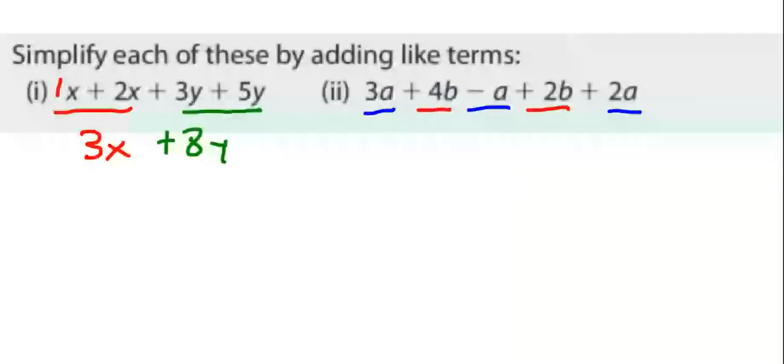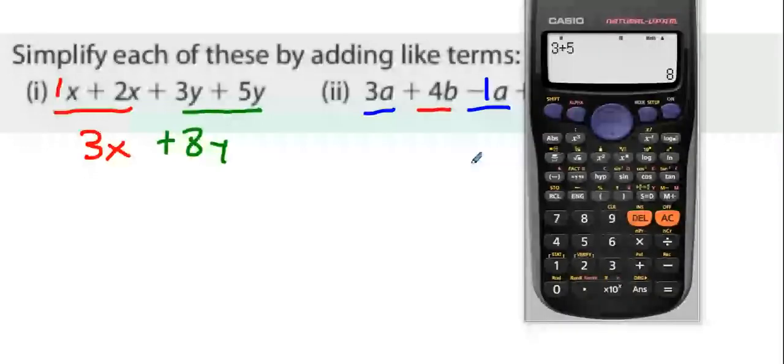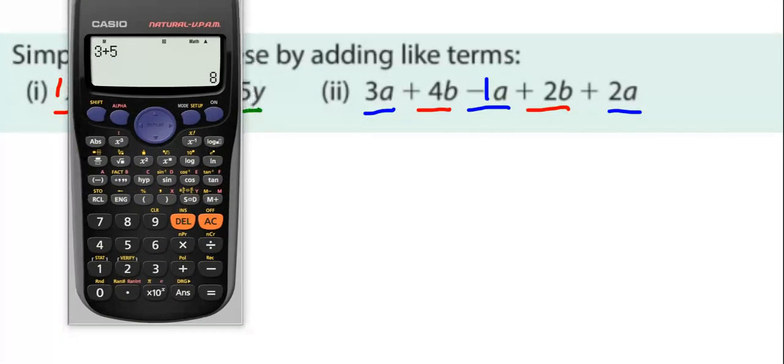Now, in the next question, see the minus A? That's actually minus one A. So, using the blue lines, here's what I'm going to do. I'm going to enter three, take away one plus two.